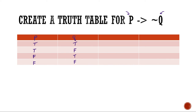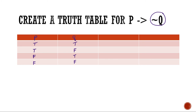My goal is to construct the left-hand side of the compound statement, then the right-hand side, and then put them together. Looking at the left-hand side, it only has a P, and we already have that column, so I consider the left side done. The right side has the negation of Q. I have a Q column, but I don't have a negation of Q column, so I'm going to add that in right here.